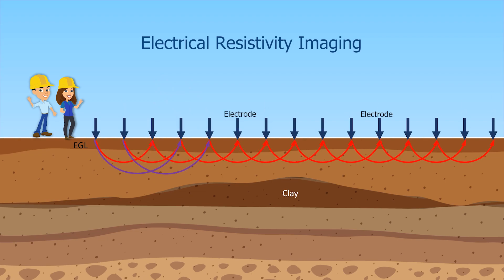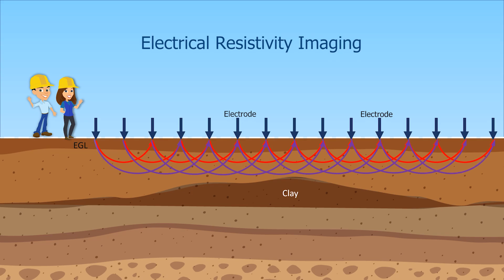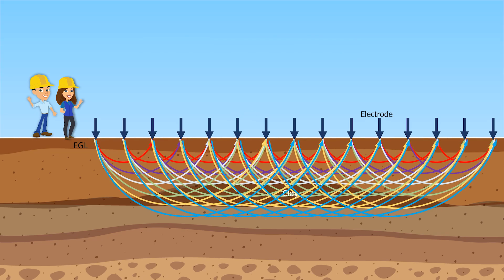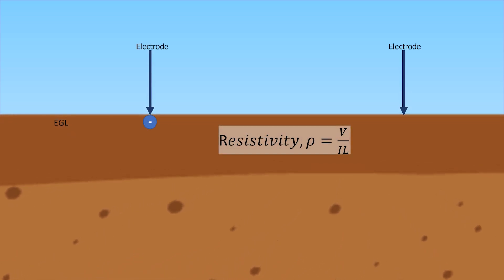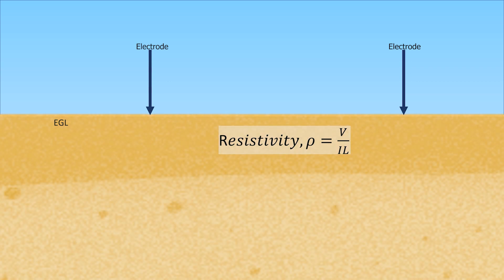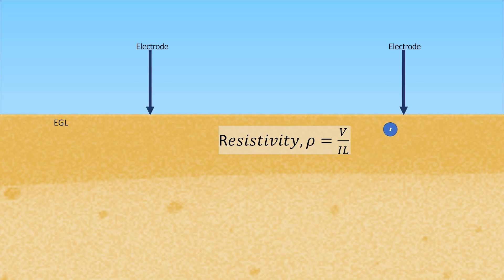We insert electrodes in the ground to pass electricity through the soil layers. Can you please elaborate? The electron, while passing from one electrode to another, faces resistance. This resistivity depends on the soil property. When the soil has less moisture and more air voids, the electron cannot pass through easily. As a result, the resistivity will be higher.